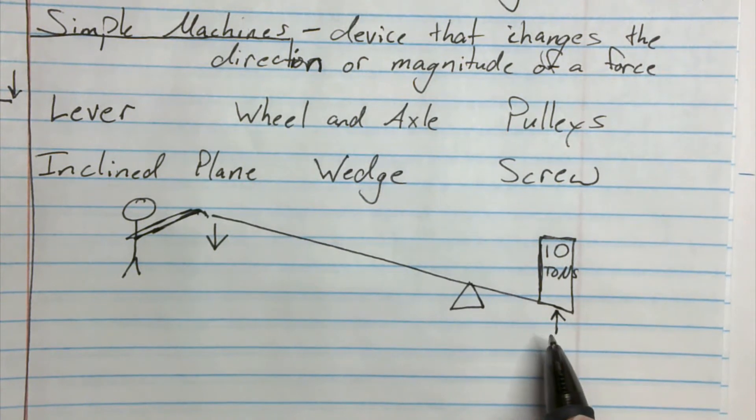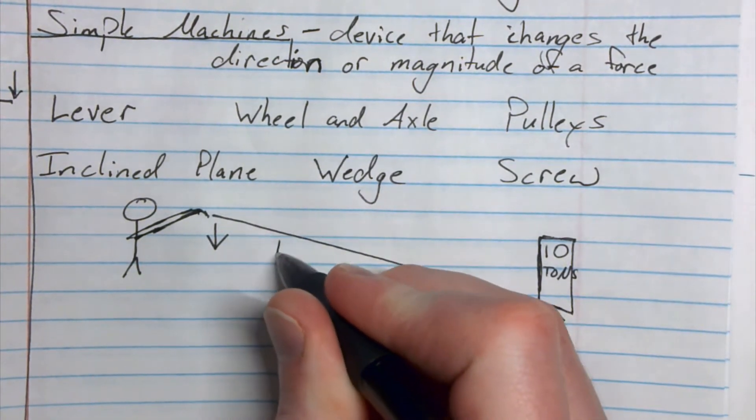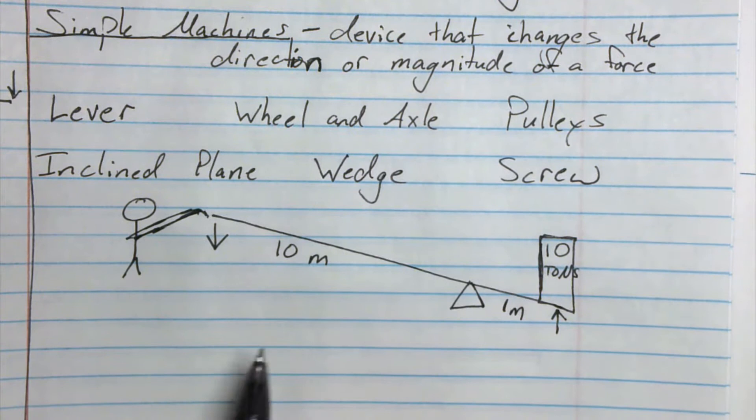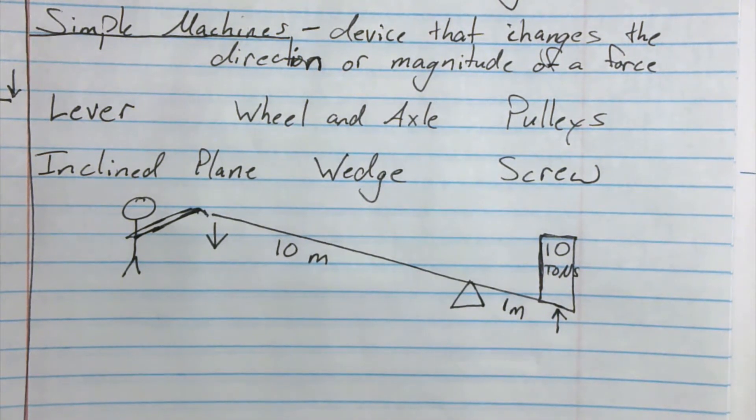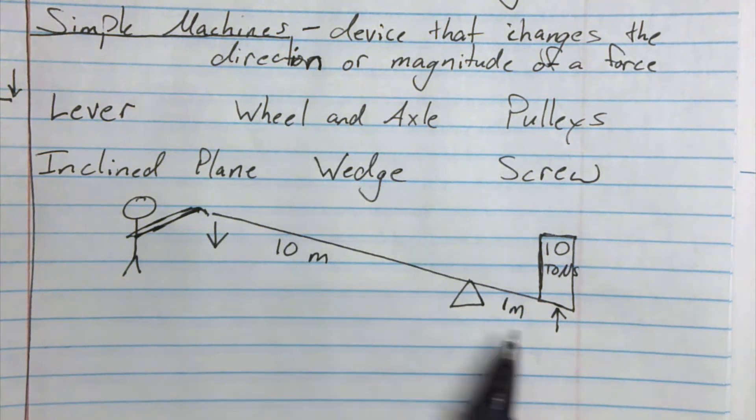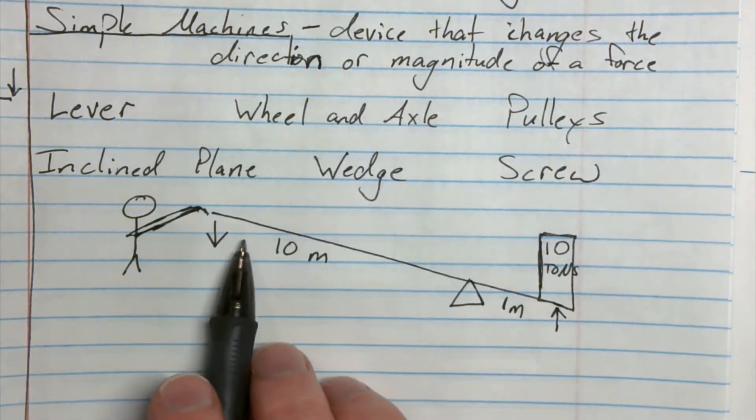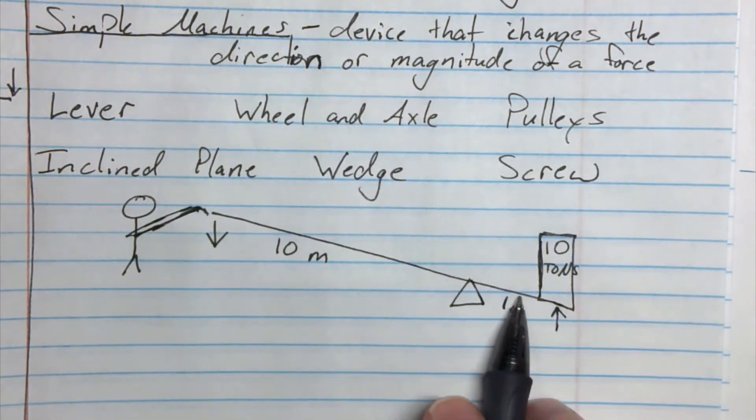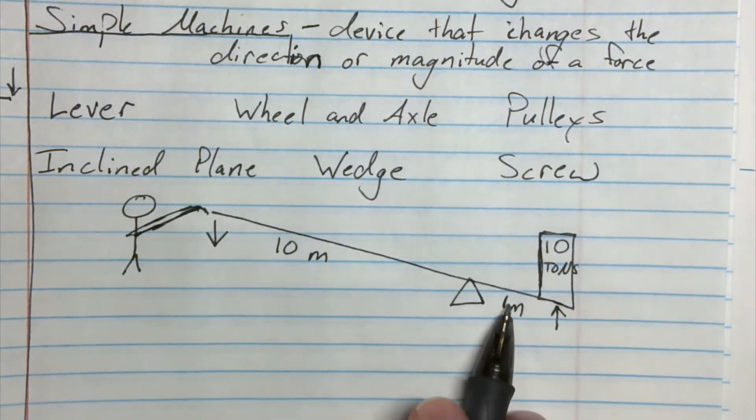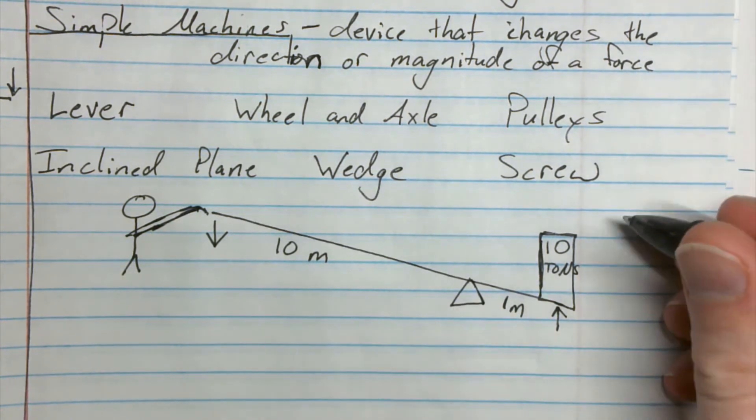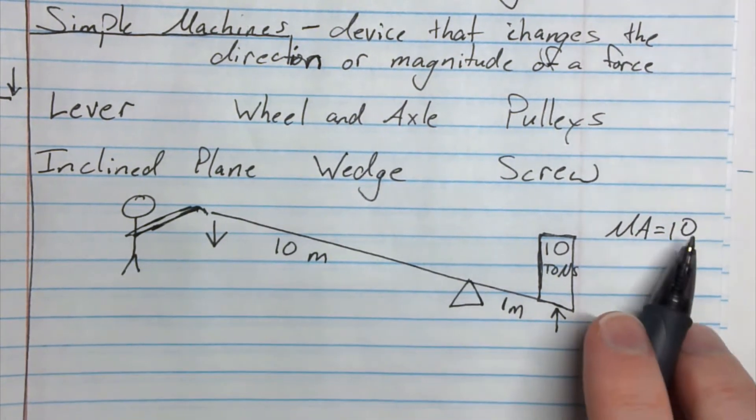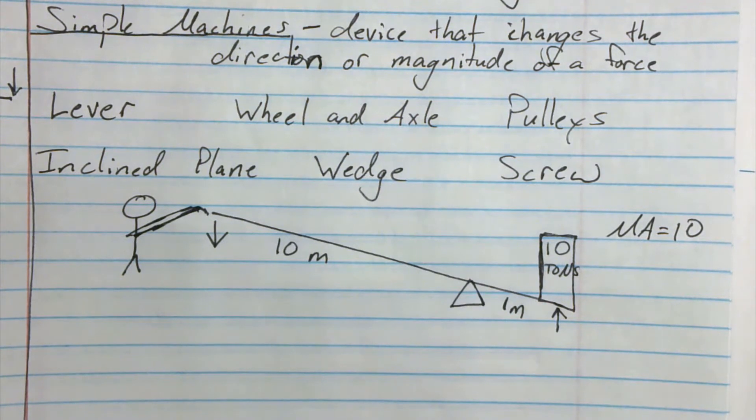That's going to give them something called a mechanical advantage. So if this is 10 meters and this is only 1 meter, I actually can calculate that mechanical advantage by dividing. This side divided by this side, because this is my input arm, this is what I'm pushing on, and this is the output arm. It's 10 divided by 1, so my mechanical advantage here is equal to 10. It multiplies whatever force I put in by 10. That's huge!